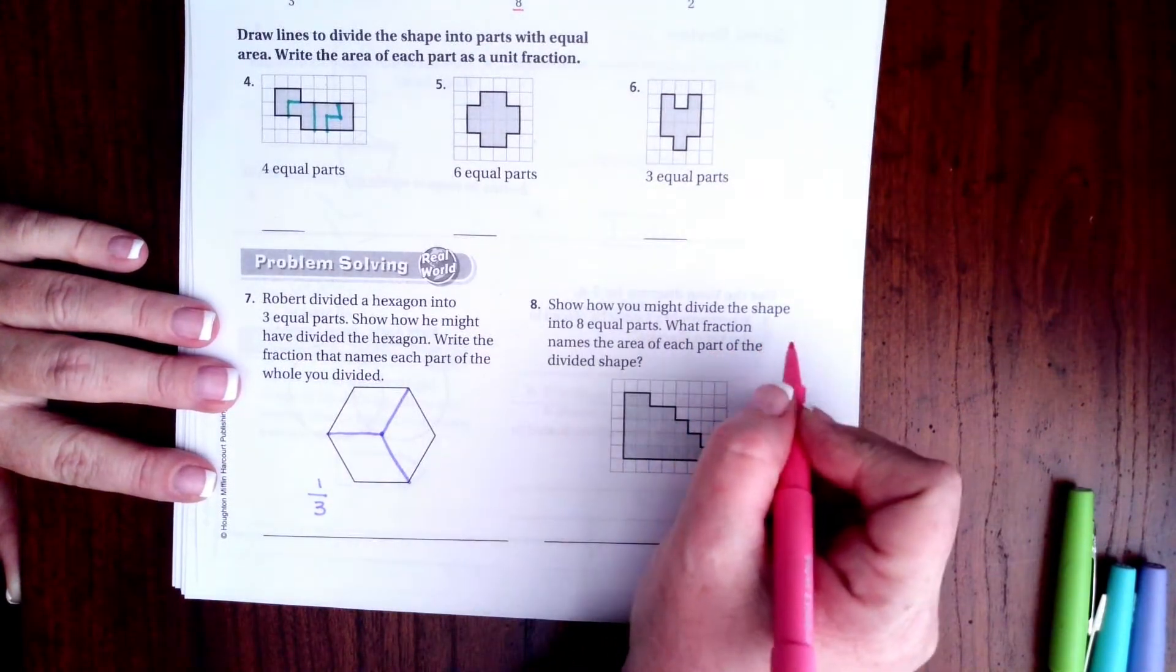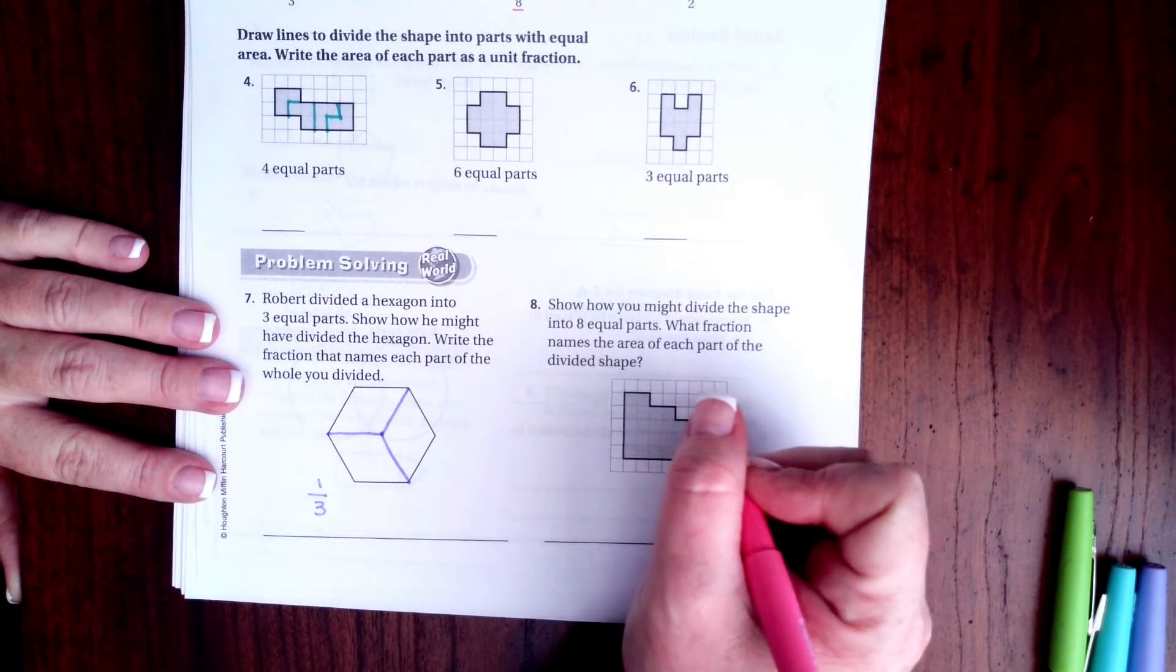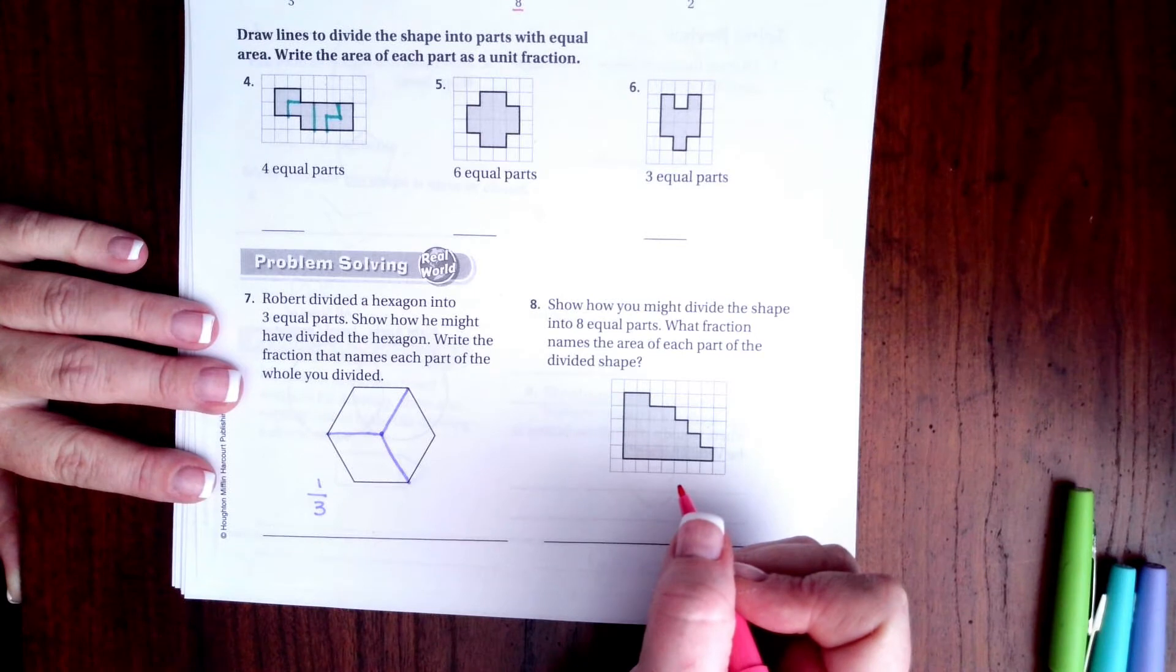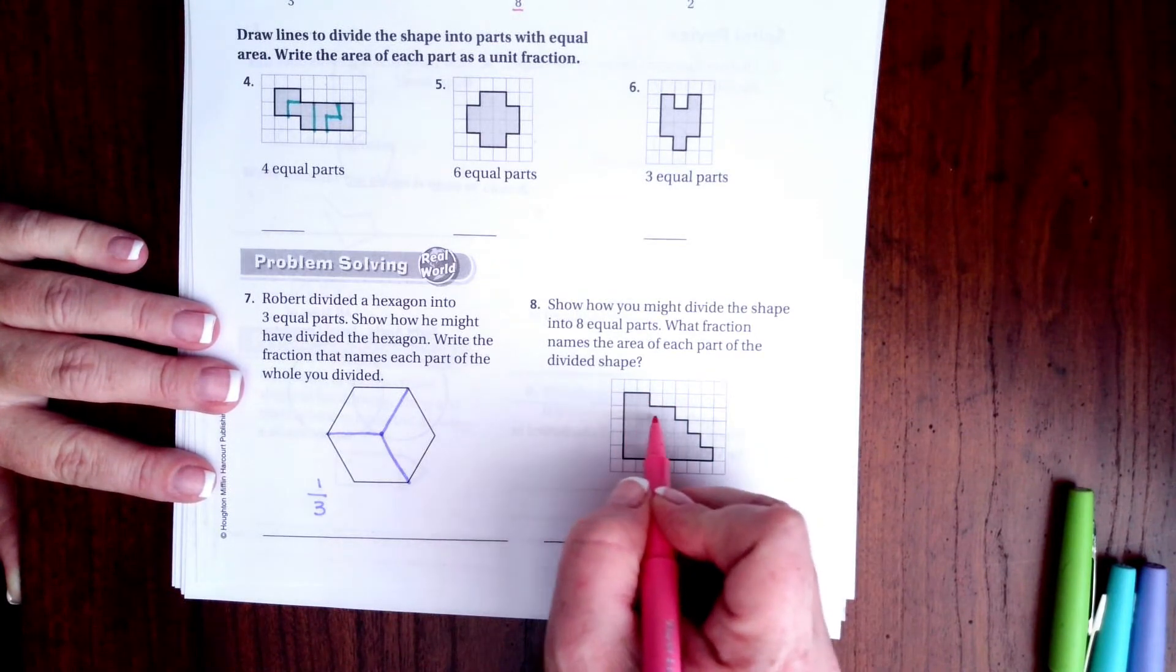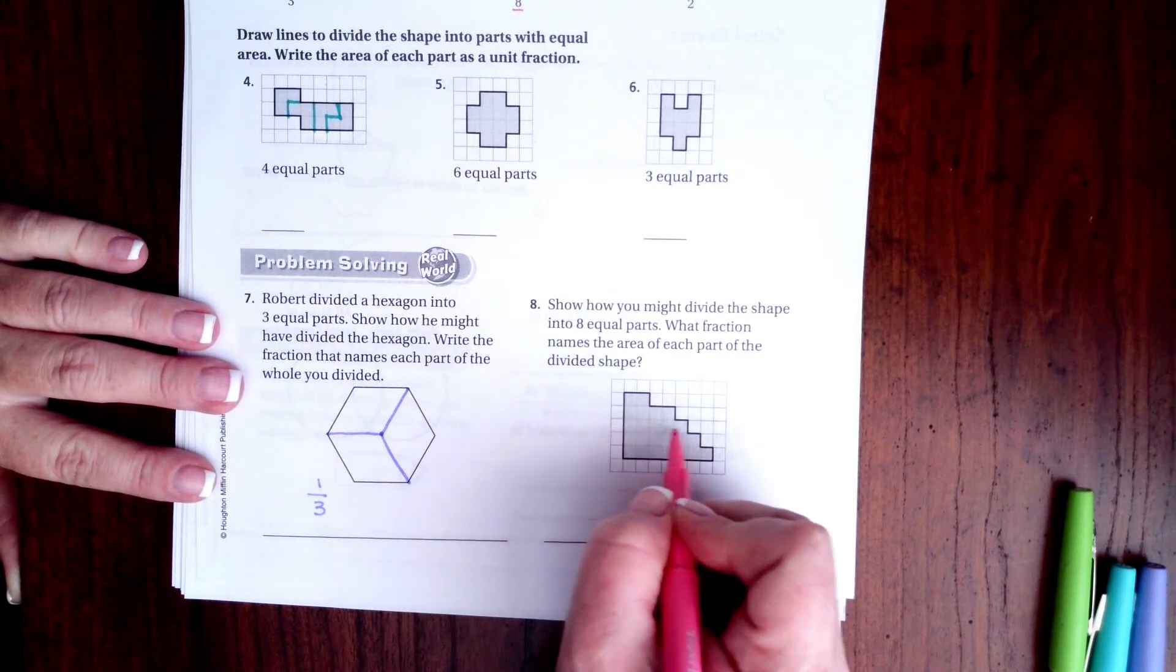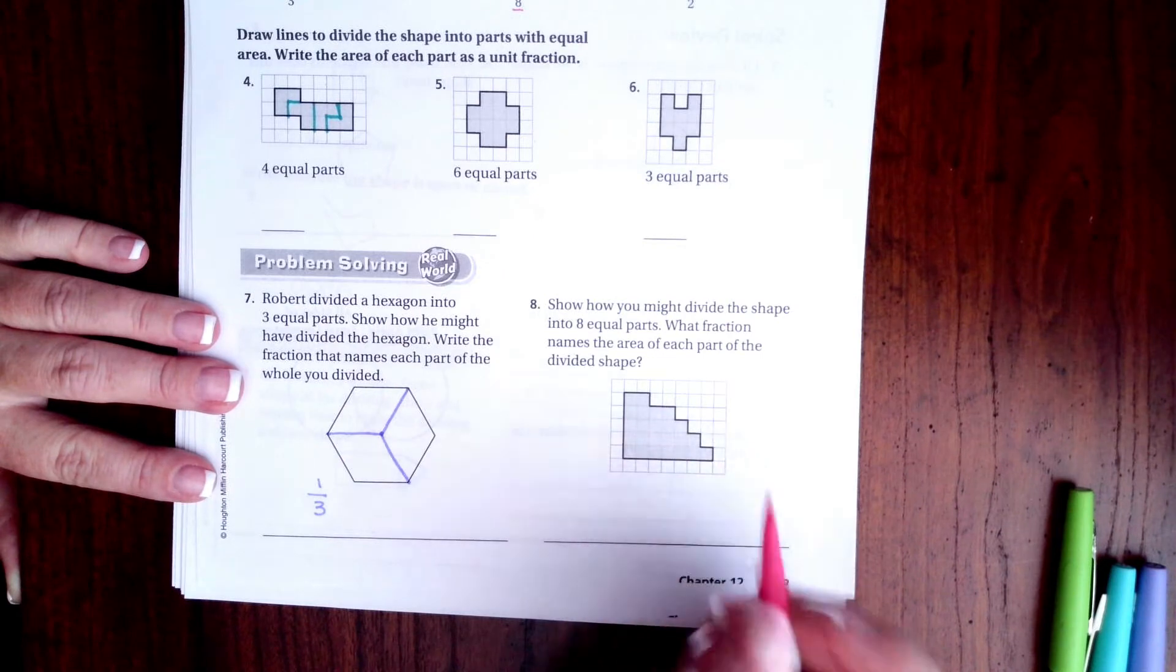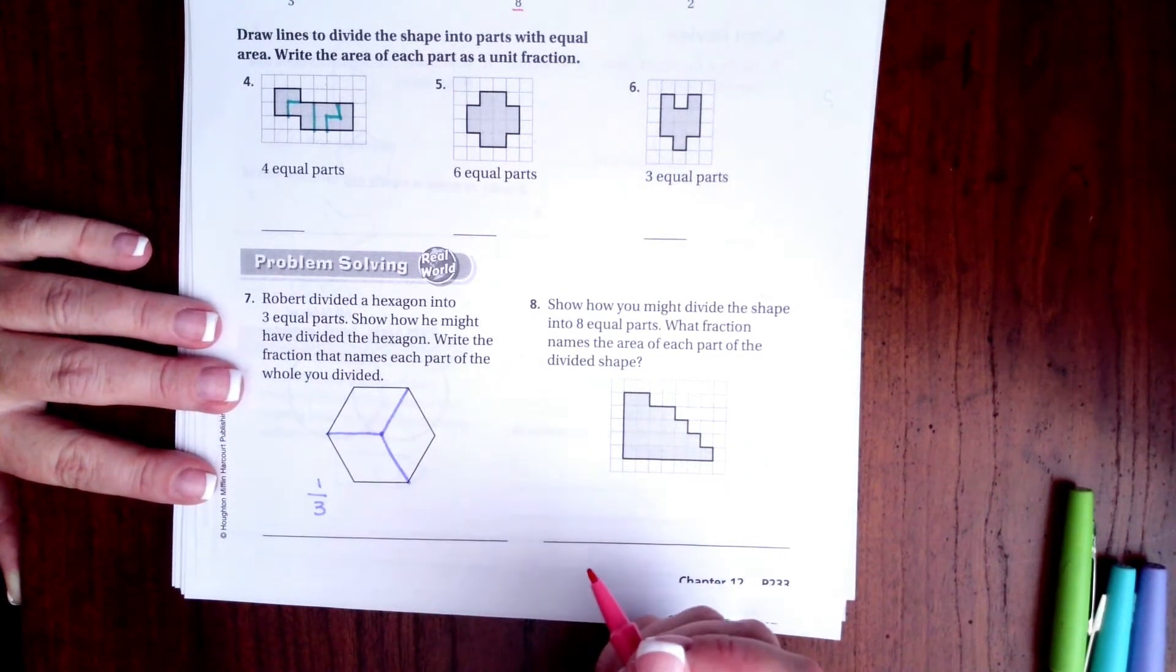Show how you might divide a shape into eight equal parts. Okay, well first we got to know how many boxes there are all together, so we got to count those. One, two, three, four, five, six, seven, eight, nine, ten, eleven, twelve, thirteen, fourteen, fifteen, sixteen, seventeen, eighteen, nineteen, twenty, twenty-one, twenty-two, twenty-three, twenty-four. So there's 24 parts, okay.